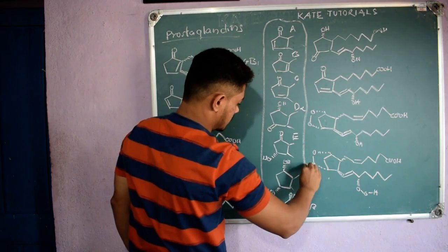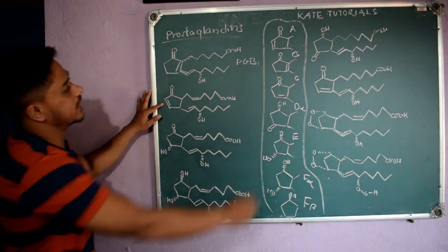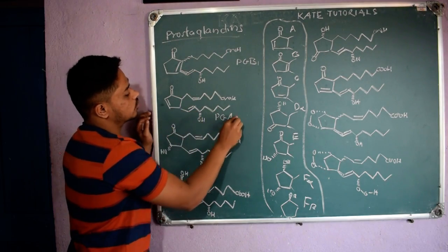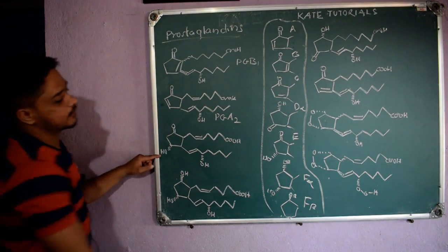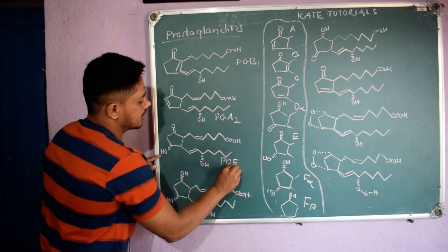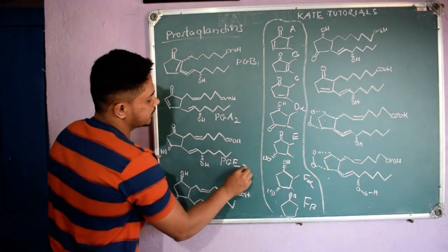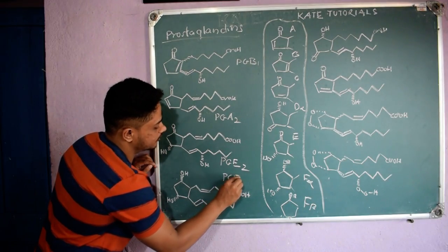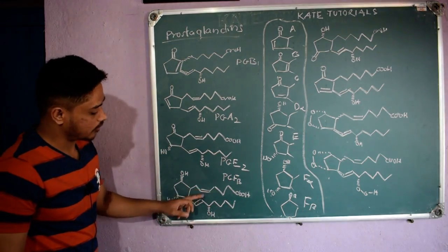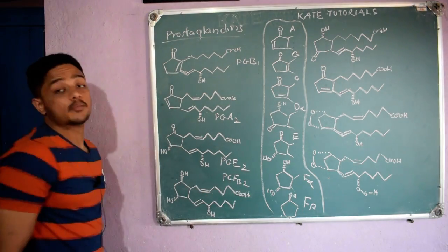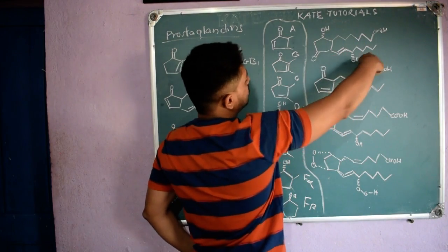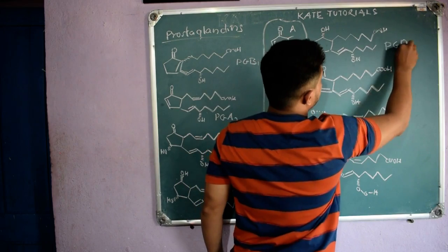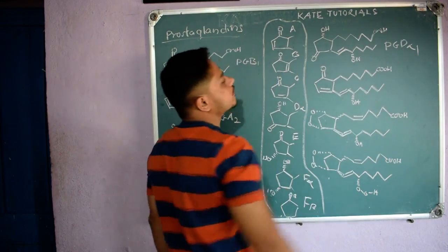Now let's look at specific examples. This structure is type A, so it becomes PGA — PG stands for prostaglandin — and the number of pi bonds in the side chain is 2, so it is PGA2. This structure is type E, so it is PGE2. This is type F, and since the OH is above the plane it is beta, with 2 pi bonds in the side chain, so it is PGFβ2. This one is type D — below the plane so it is alpha, with only one pi bond in the side chain — so it is PGDα1.